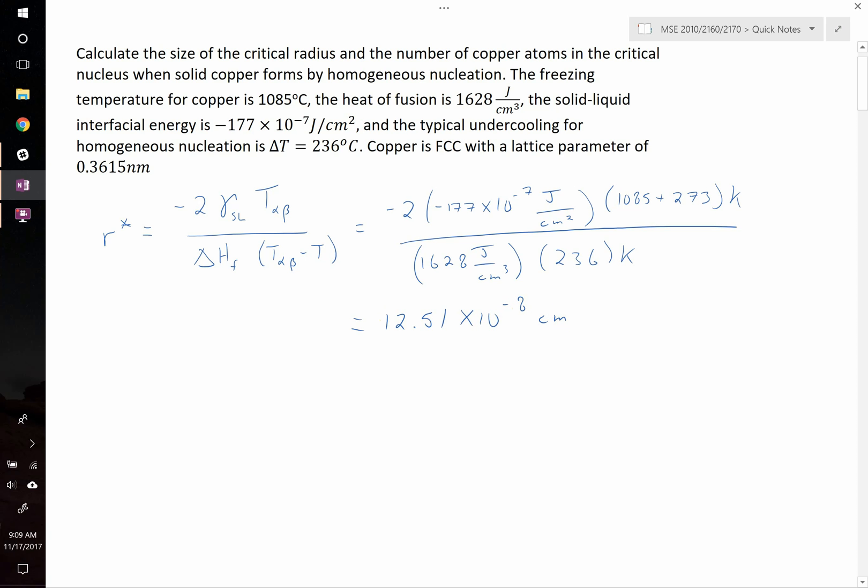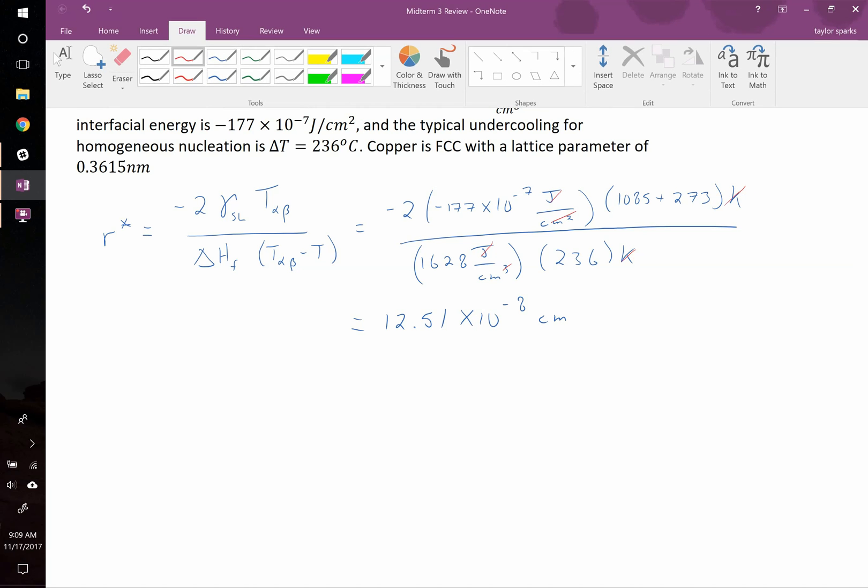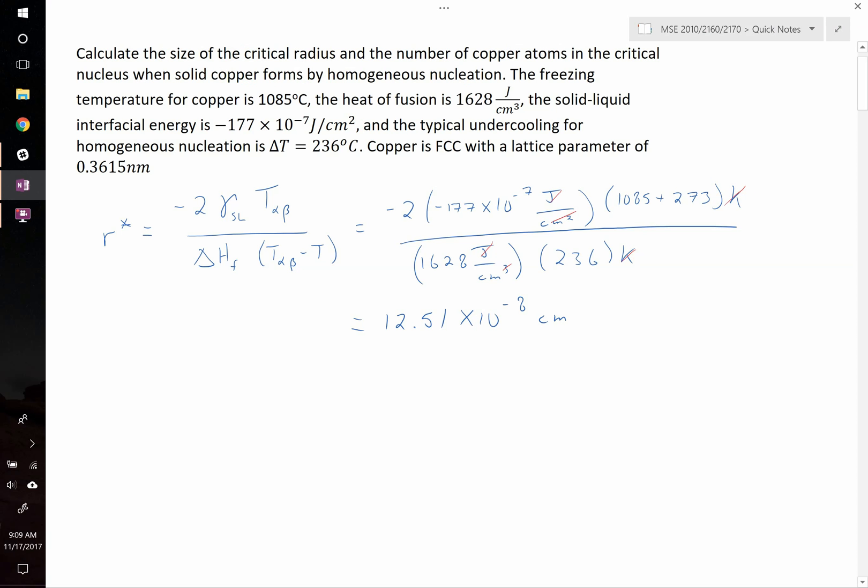Notice that the centimeters squared up here, these cancel with two of the three of those, the joules cancel, the Kelvins cancel, and that's why this comes out just in centimeters. So now that we have the radius of this, that's the first part of the question, we want us to calculate the size of the critical radius, and we've got that complete. The next part of the question says...